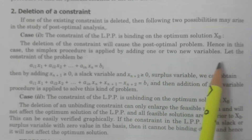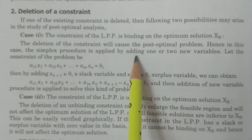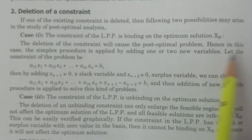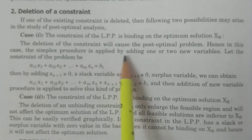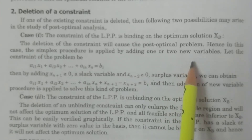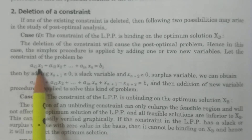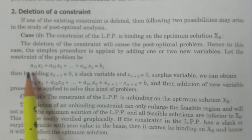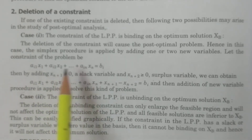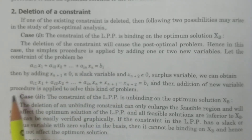If the simplex procedure is applied, we can add one or two new variables — slack and surplus variables. For the existing constraint: ai1·x1 + ai2·x2 + ... + ain·xn equal to bi. If we delete this constraint, xn+1 is a slack variable (greater than or equal to 0) and xn+2 is a surplus variable.